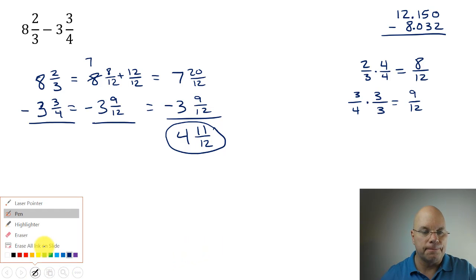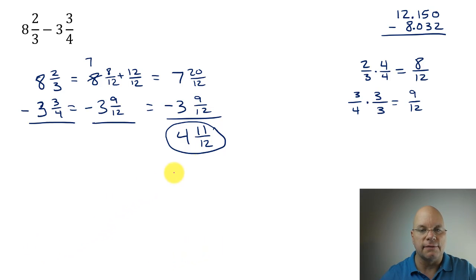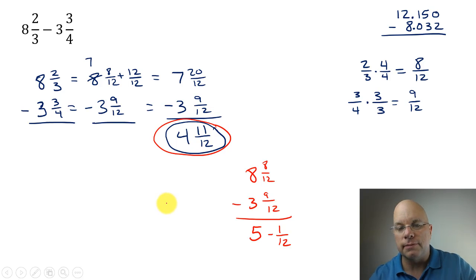I want to look at that other idea about using the negative number because I did have some students last year that preferred this method. So let's go back to where we had 8 and 8/12 minus 3 and 9/12. We can subtract 9/12 from 8/12, but we get negative 1/12. And if I subtract three from eight, I get five. Well, what's five plus a negative 1/12 or five minus 1/12? It's just 1/12 less than five, which is 4 and 11/12. So you can do it that way if you like that method.